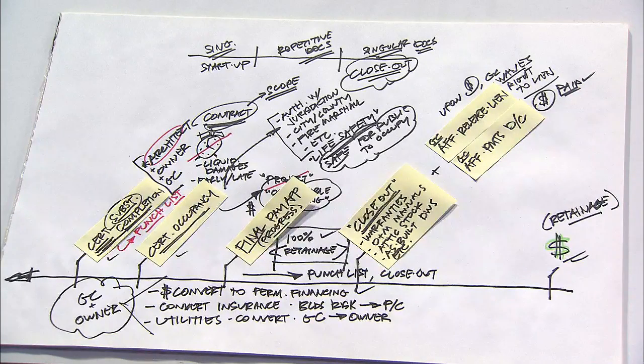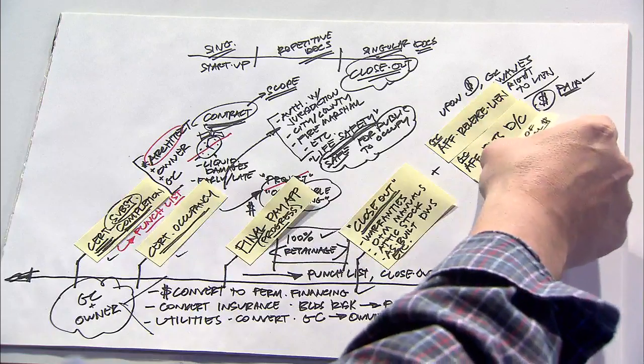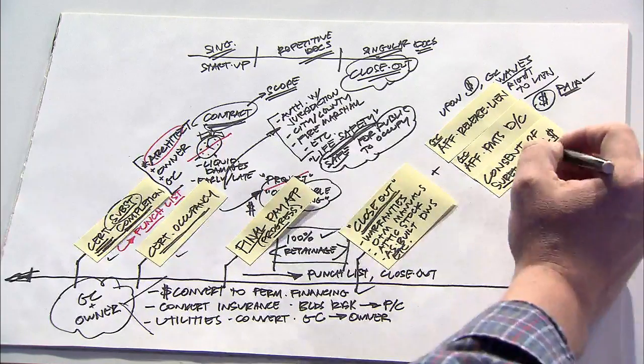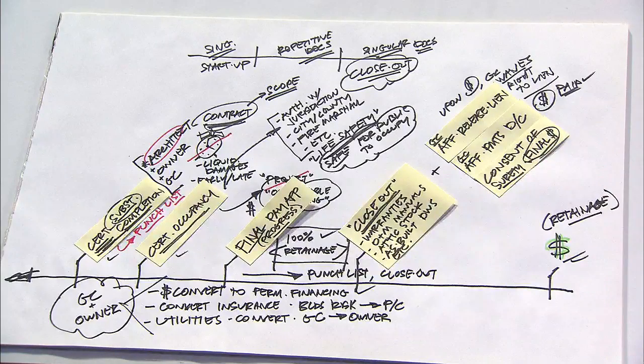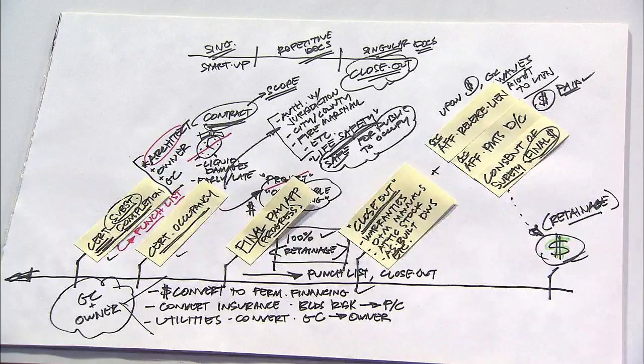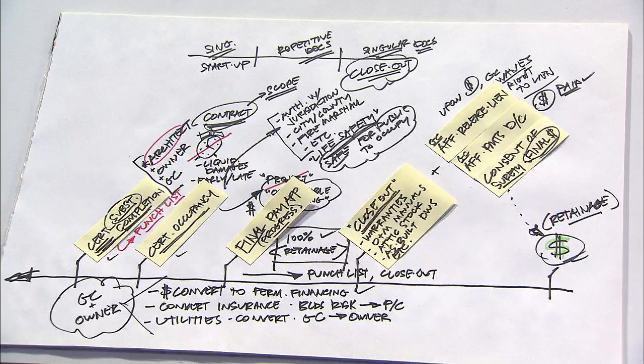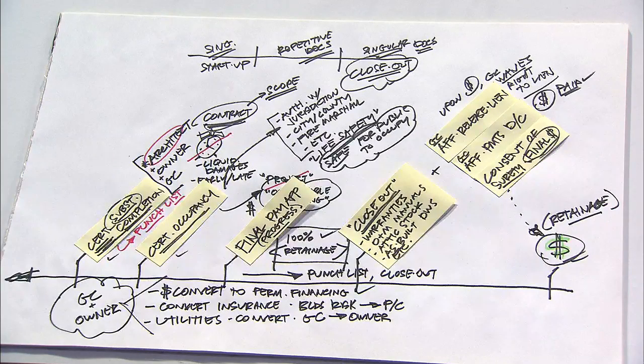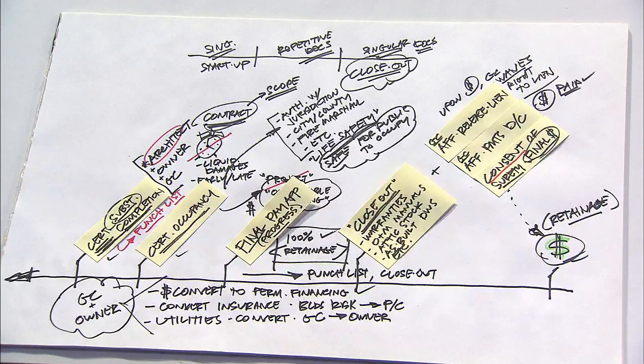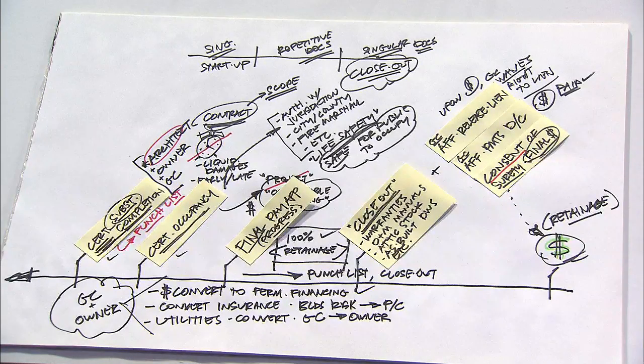Related to the bonding process, the contractor would also submit a document executed by the surety. And that is a consent of surety to final payment. The surety is very interested in knowing when the contractor is about to receive their final dollar. And before the owner will release that dollar, the surety would have to give consent that they acknowledge that the contractor is about to be paid.